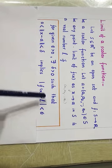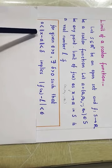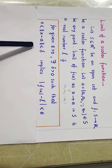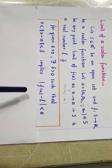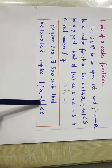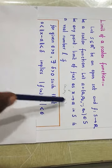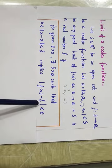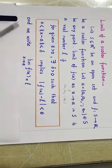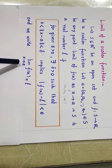So it tells us that for given epsilon, if there is a smaller number delta such that the distance between X and A is becoming very small — even less than delta — then the distance between F(X) and the number L is also becoming very small. So we say that when X is approaching to A, then F(X) is approaching to L. When X is tending to A, F(X) is tending to L, and we write this as: limit of F(X) is equal to L as X tends to A.